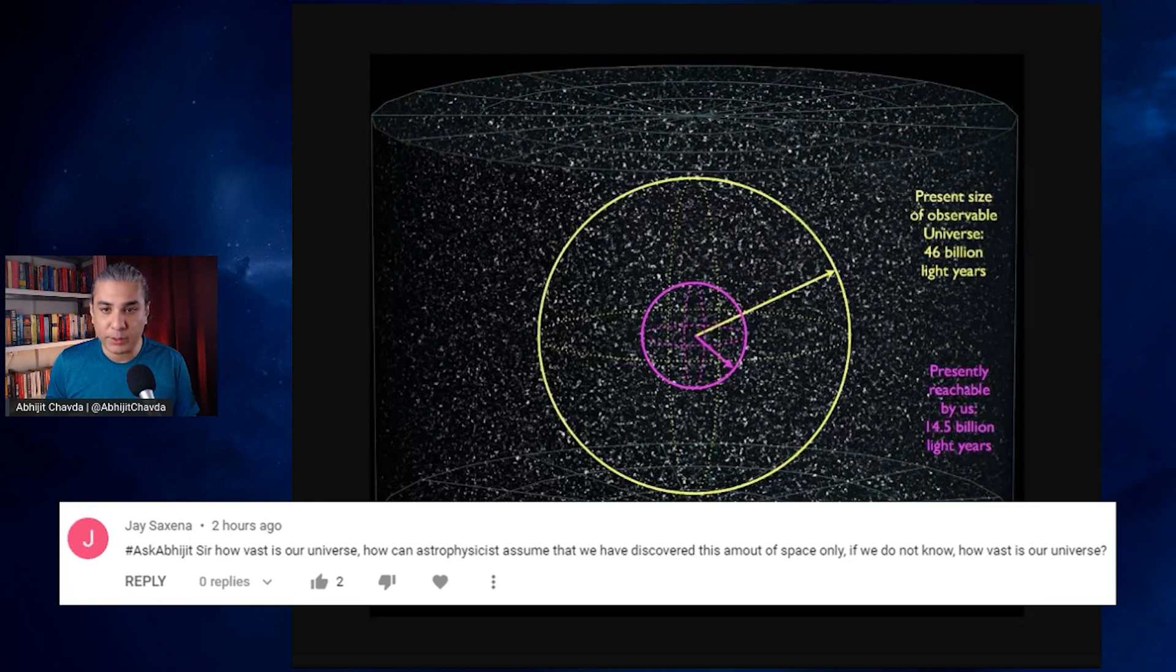So we don't assume that we have discovered a certain amount of space. We can calculate it using techniques such as redshift. So we know how far is the furthest object that we have ever seen, which is a very distant and a very faint galaxy.